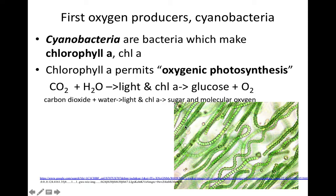Here are some examples of the beautiful cyanobacteria we'll be looking at in lab. They are bacteria. In the old days, they were called blue-green algae because they appear kind of bluish-green, and people thought they were algae. But algae are eukaryotes, and cyanobacteria are prokaryotes — so the better name is cyanobacteria. The photosynthetic pigment they evolved is chlorophyll A, and chlorophyll A permits oxygenic photosynthesis.